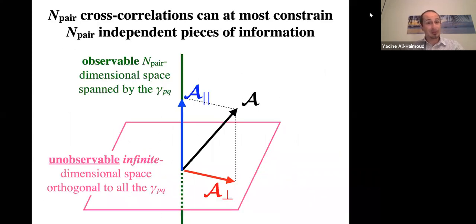Now let me make a rather obvious but very important point nonetheless. Given n_pair cross correlations between different pulsar pairs, one can at most constrain n_pair independent pieces of information. So if I were to draw an infinite dimensional space in which these gravitational wave background maps live, this A, there is an n_pair dimensional space which is spanned by these timing response functions and one can measure in principle the component of A on this space. But this A, gravitational wave background, also has a component on the infinite dimensional space of maps which are completely unobservable because they are orthogonal to all of these timing response functions. So again, this is a piece which is fundamentally unobservable by a pulsar timing array. So you can think of this estimator as really the estimator of the observable part only and you have no hope to ever measure this with a pulsar timing array.